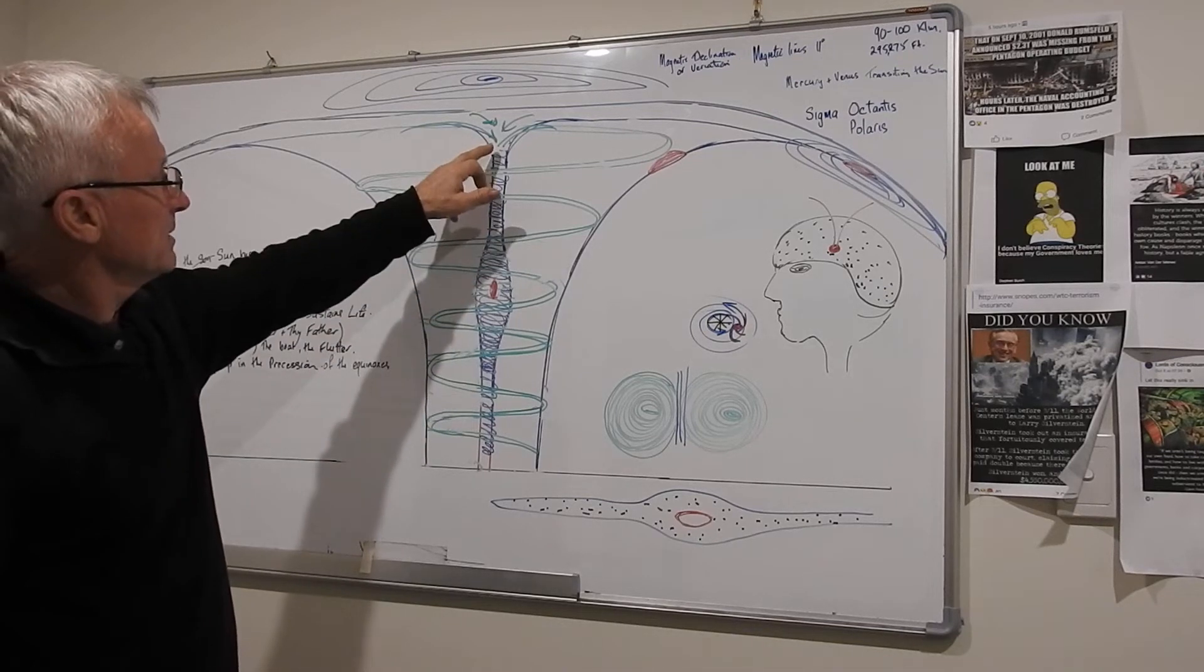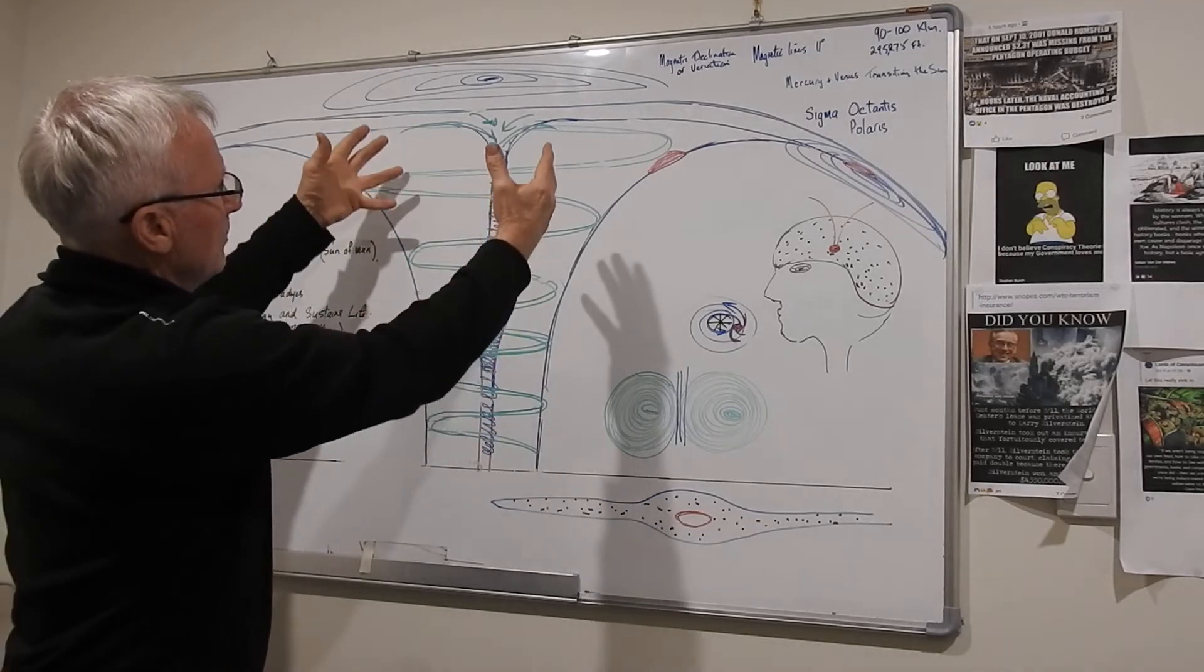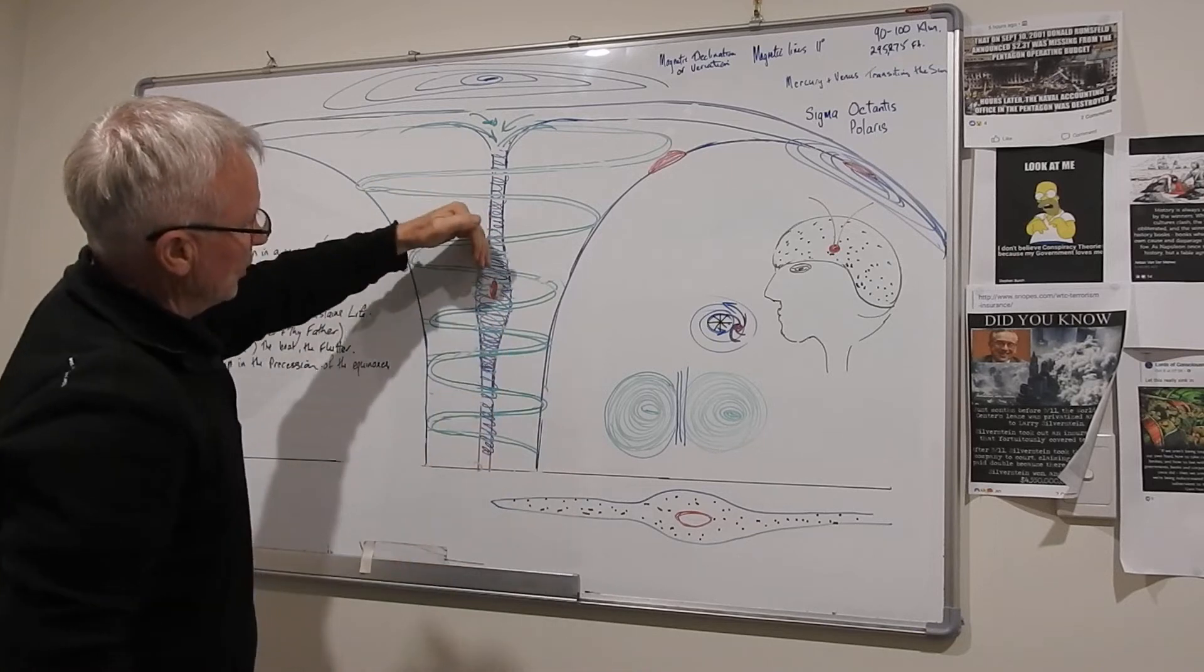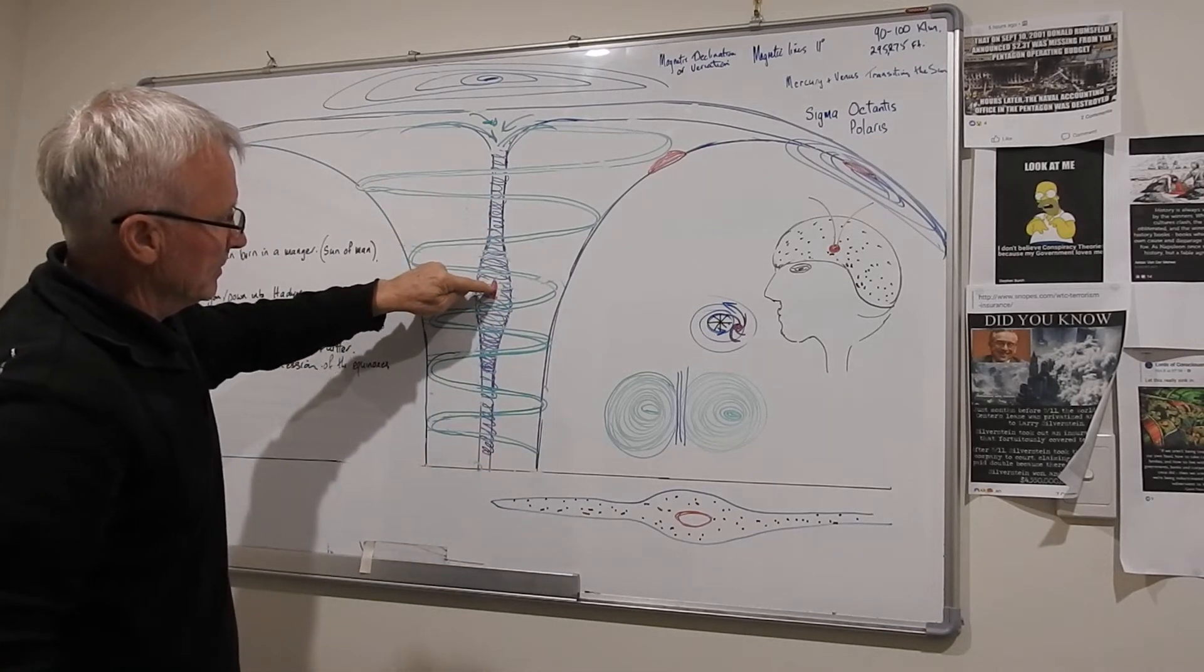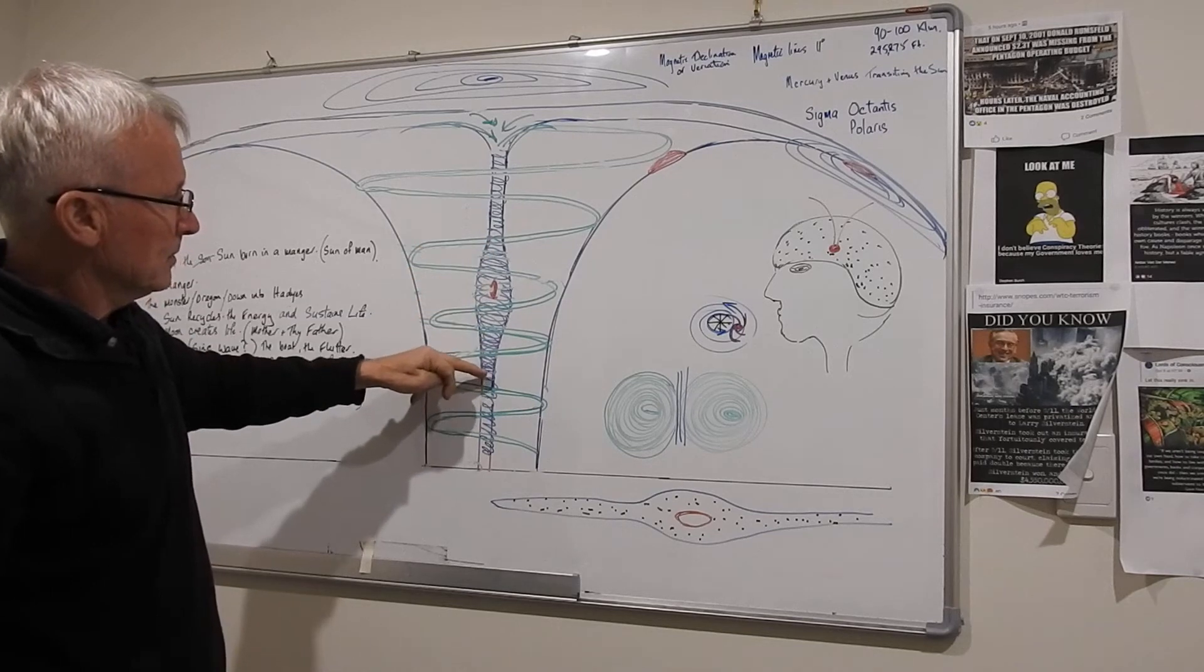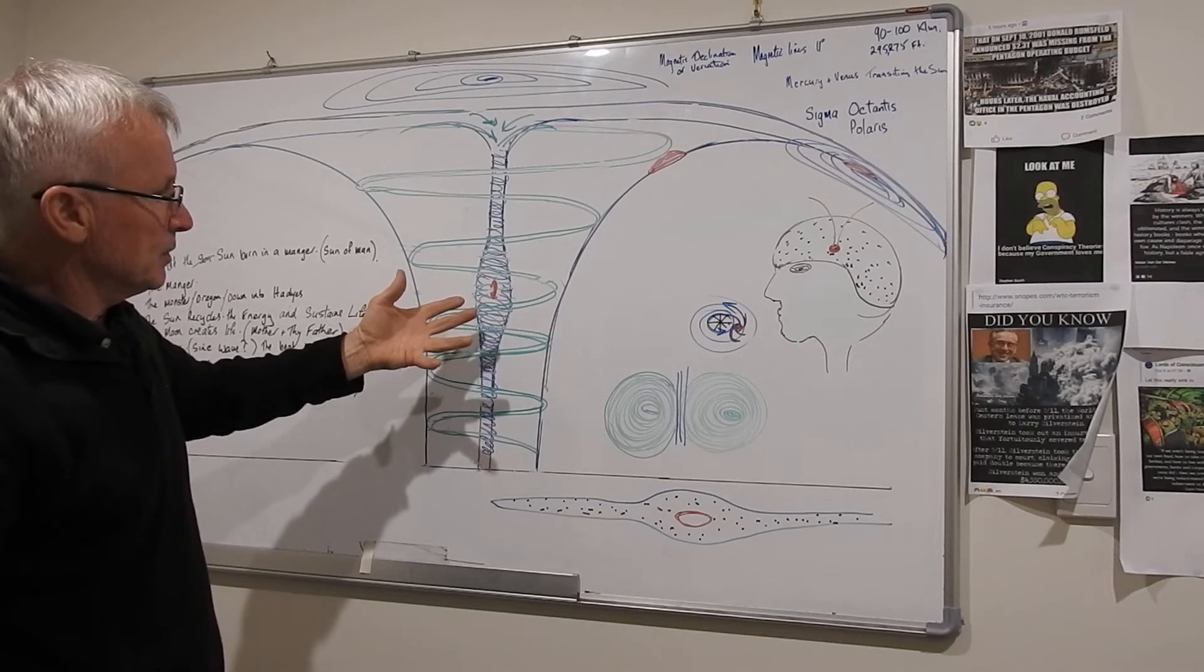This is the vortex where everything over time gets sucked into, recycles back through the sun. To get to the father, you go through me. There's another one: to know that father is to know me.